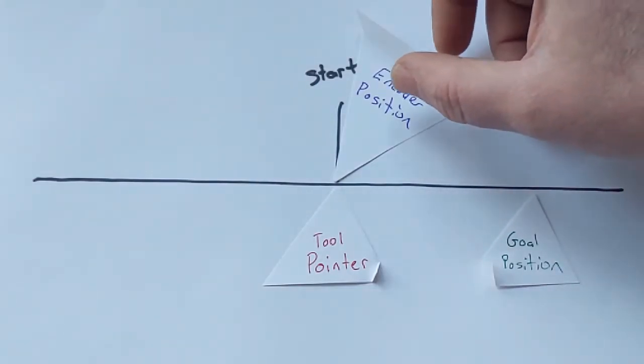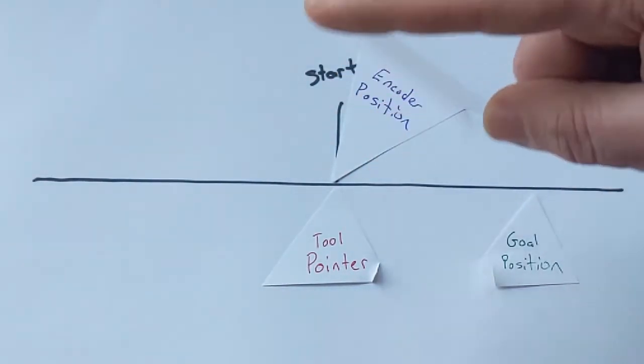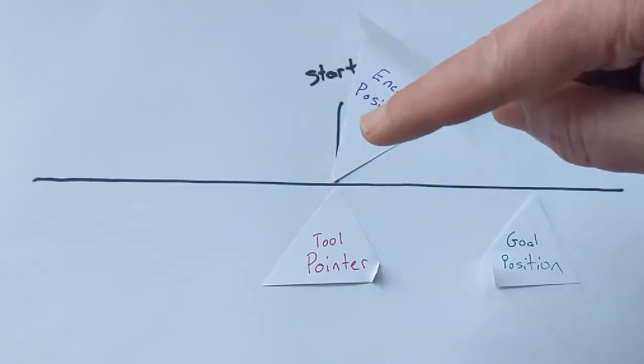And the way the code works is as the spindle continues to spin and again it can spin counterclockwise or it can spin clockwise.